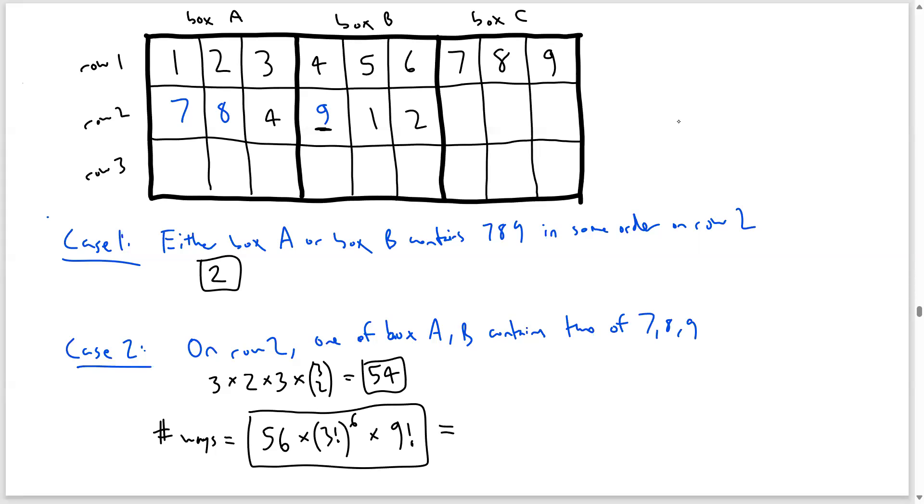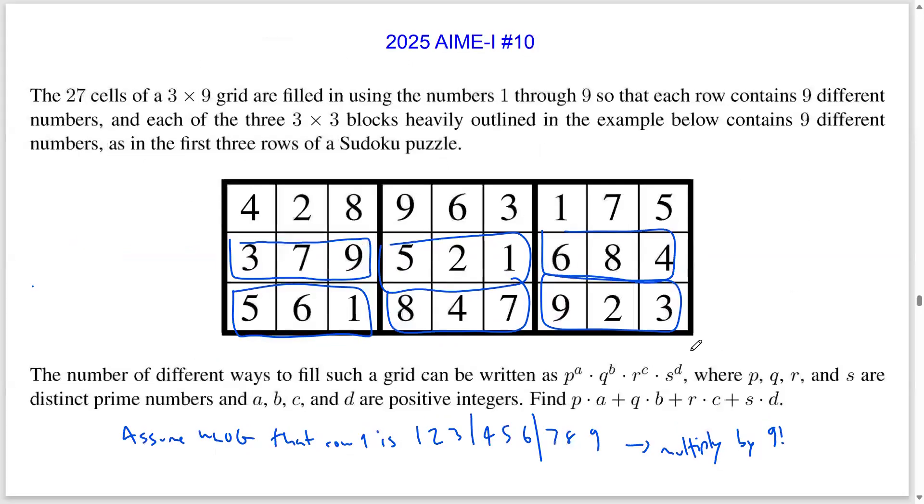The prime factorization of this number is 2 to the 16 times 3 to the 10 times 5 to the 1st times 7 squared.